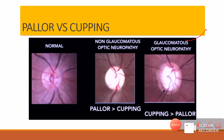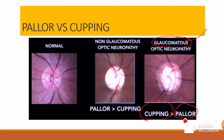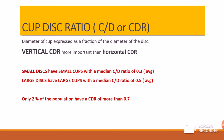Regarding pallor versus cupping: in a normal disc the neuroretinal rim is pinkish and the cup is pale. In glaucoma, cupping is more prominent than pallor. However, when we see a pale optic disc, we should think of non-glaucomatous optic neuropathy — such as arteritic or non-arteritic AION — where disc pallor is more prominent than cupping.